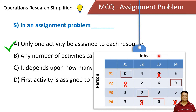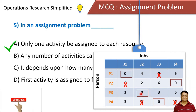Looking at this matrix where assignments have already been made: person P1 is assigned job J1, and person P2 is assigned job J4. You can see that only one job is assigned to only one person.